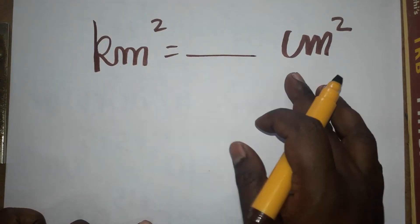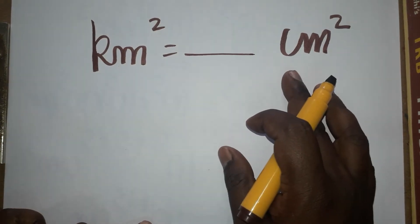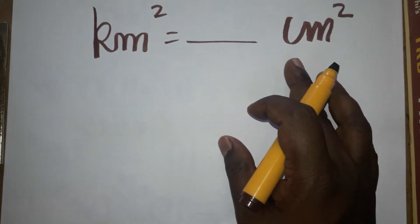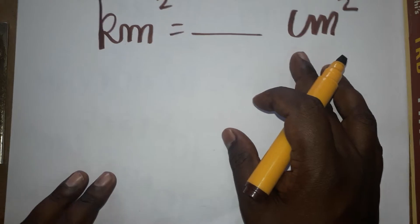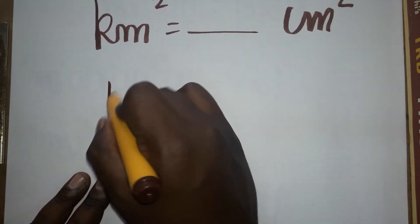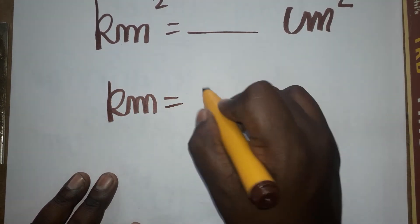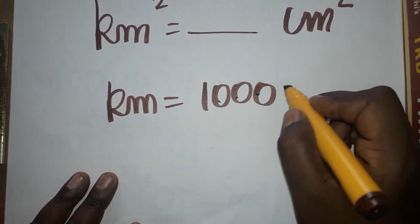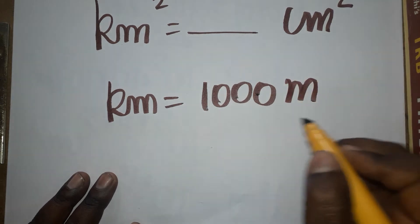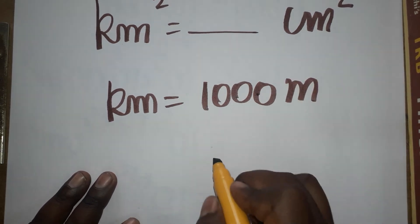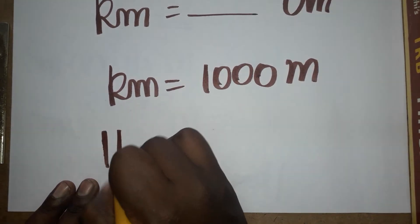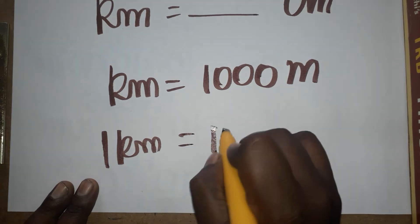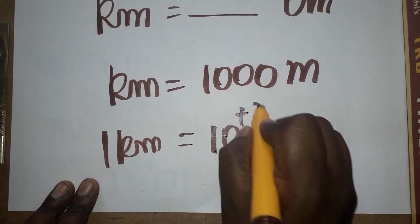We are going to learn: 1 kilometer square is equal to how many centimeter square. First we will learn 1 kilometer is how many meters. 1 kilometer is 1000 meters, so 1 kilometer is equal to 10 power 3 meters.